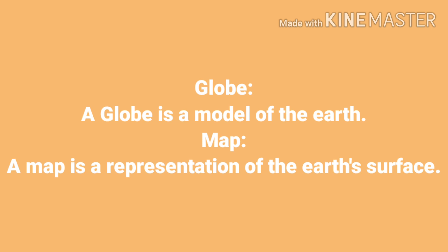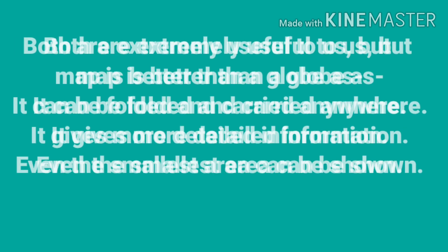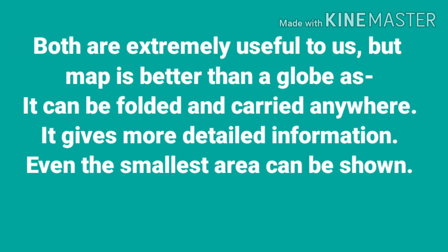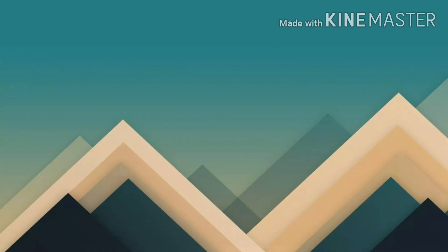A map is a representation of the earth's surface. Now both are extremely useful to us, but a map is better than a globe as it can be folded and carried anywhere. It gives more detailed information — even the smallest area can be shown.